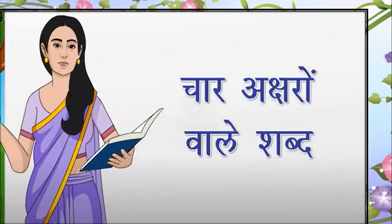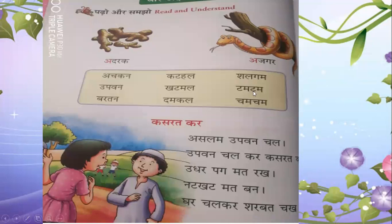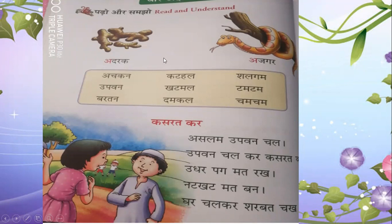You already know about the two-letter words and three-letter words. Now today we are going to read four-letter words. In your textbook, see the page — all the four-letter words are given. We will read all the words one by one. It is written here: Pado or Samjo — read and understand. Shall we start?